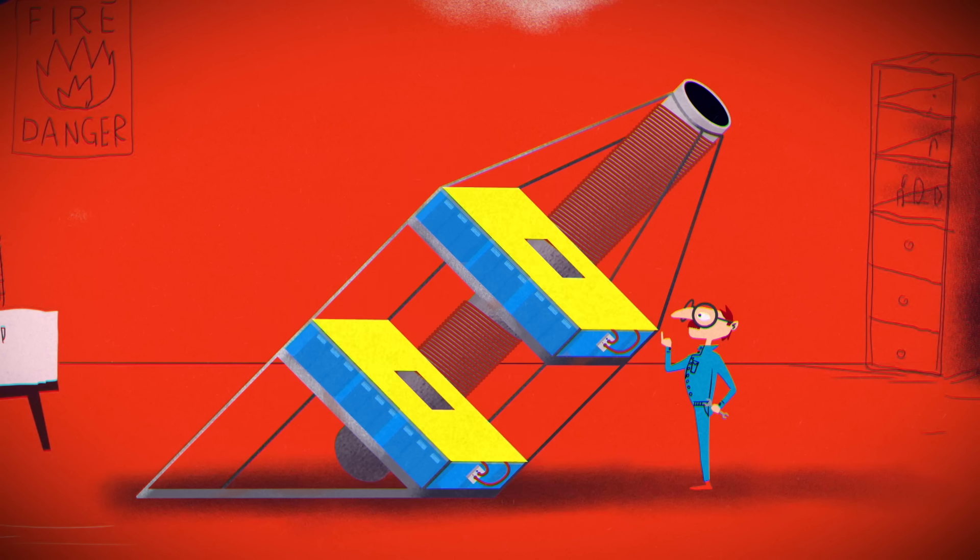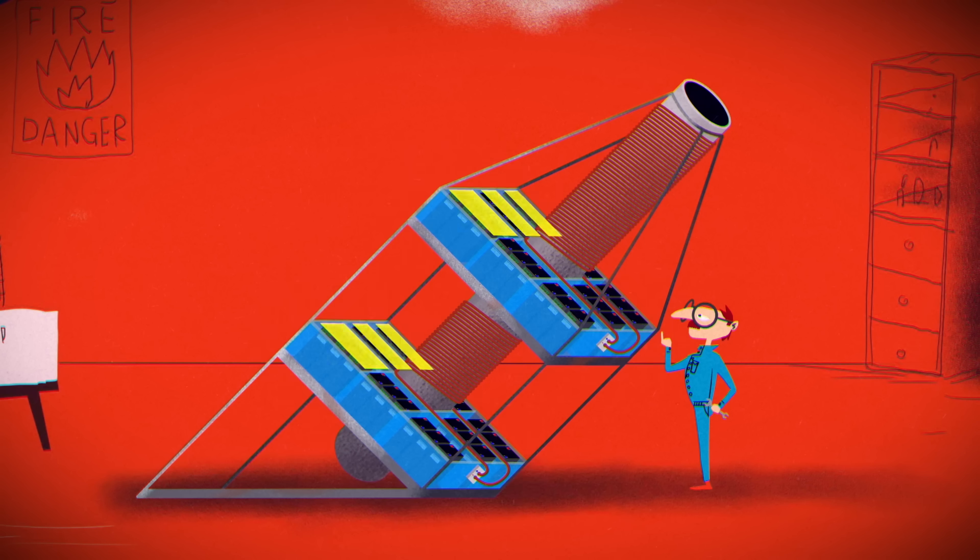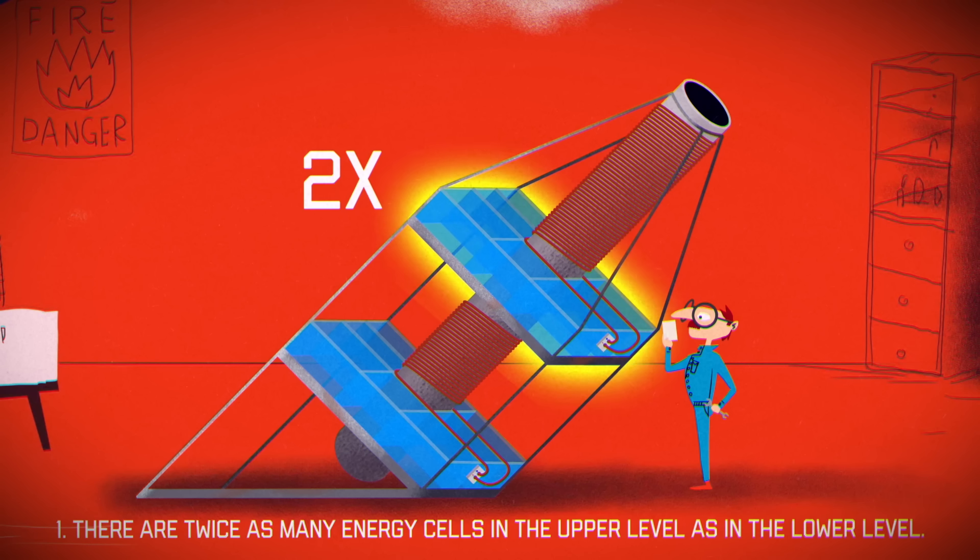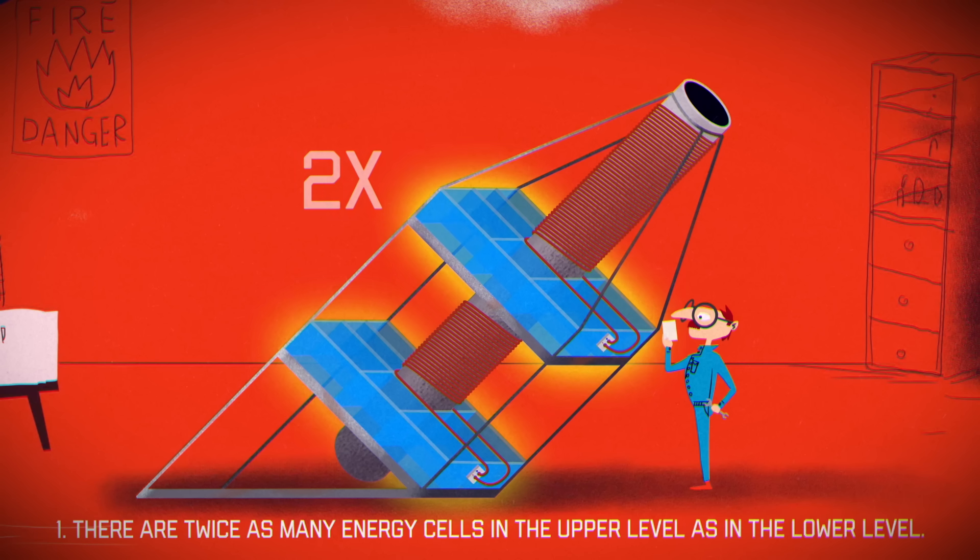Each level is a hollowed-out square, with three chambers to a side. The acceleration is survivable if there are twice as many energy cells in the upper level as in the lower level.